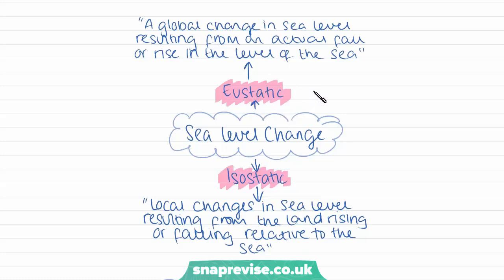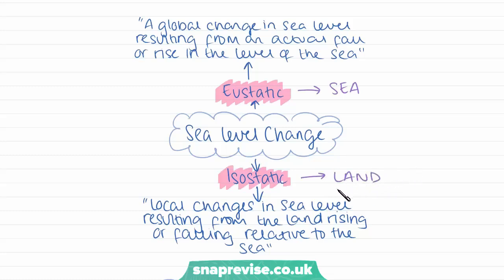Eustatic change is a global change in sea level resulting from an actual fall or rise in the level of the sea itself. It's really important to remember that eustatic relates to the changing levels of the sea. Isostatic sea level change, on the other hand, is related to the land — it's sea level change in relation to the land. Local changes in sea level result from the land rising or falling relative to the sea, because land can go through periods of uplift or subsidence. So: isostatic is land, eustatic is sea.